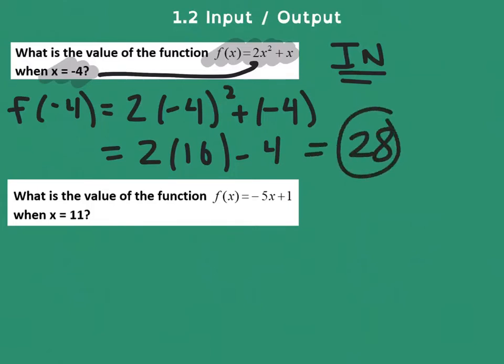So this value that I'm finishing with is the output value, and the input value was right here at negative 4. Just one more quick example.